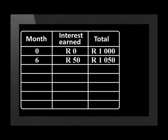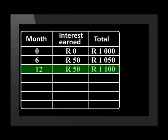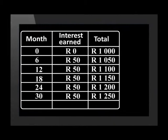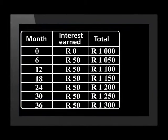This table shows how the total increases over time. After six months the total is one thousand and fifty rand. After twelve months the total is one thousand one hundred rand. And after three years the total is one thousand three hundred rand. In this example of simple interest, fifty rand is added to the original starting amount every six months.